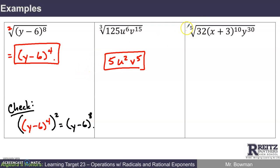Here's another example. I've got the 5th root of 32 x plus 3 to the 10th, y to the 30th. So I'm looking for things I can raise to the 5th power that give me each of these factors. What can I raise to the 5th power to get 32? I think it's 2. 2 to the 5th is 32. What can I raise to the 5th power to get x plus 3 to the 10th? x plus 3 squared. What can I raise to the 5th power to get y to the 30th? I believe that's y to the 6th.